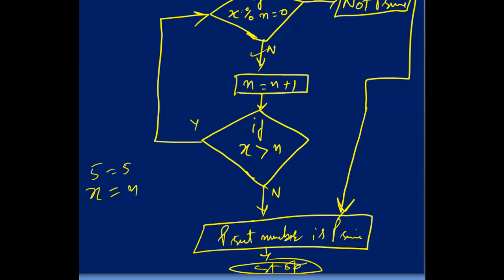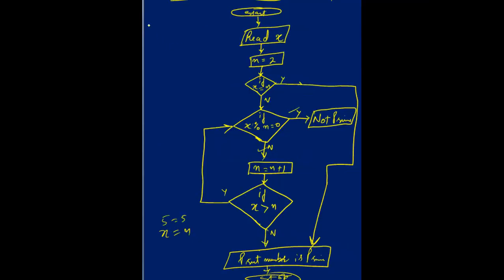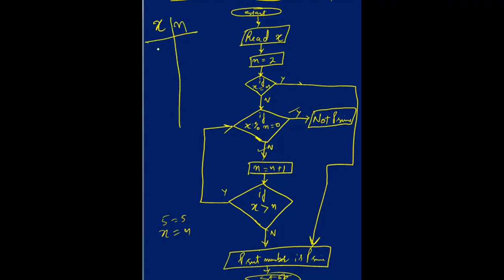Now I will explain this flowchart with the help of a memory map. Suppose x is 7 and n is initialized to 2. I read 7 into x. First, I check if x equals n — is 7 equal to 2? No. So I check x percent n: 7 percent 2 equals 1 (not 0). We go to the no branch, increment n to 3. Then check if x is greater than n — 7 is greater than 3, yes. So we loop back.